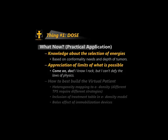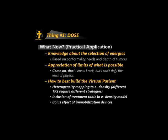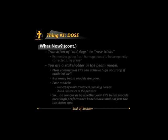If you understand attenuation, you understand energy selection — everyone knows if you need to go deeper, choose a higher energy; that's all based on attenuation. Appreciation of the limit of what's possible relates to scatter — you need to be able to say 'I know I'm great at treatment planning, but I cannot defy the laws of physics.' Understanding how to best build the virtual patient means understanding how to map heterogeneous CT volumes to electron density or mass density that the TPS can use.